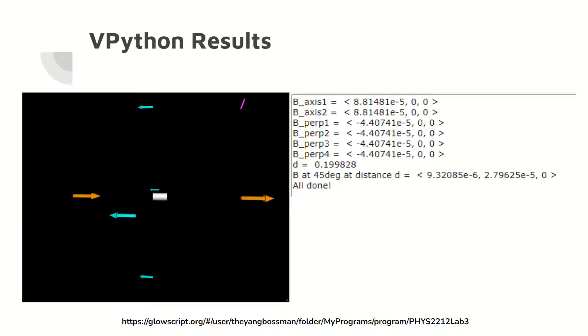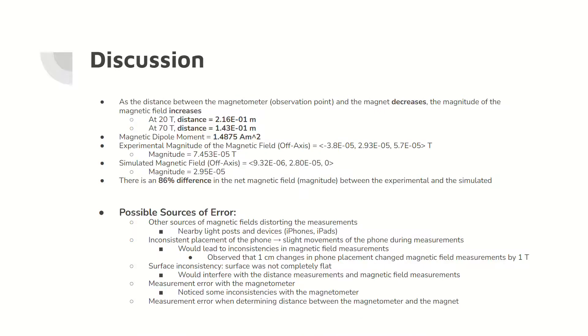Here are the vPython results, including the simulated magnetic fields. As stated, the distance between the magnet and the observation point decreases as the magnetic field increases.